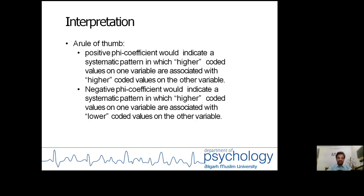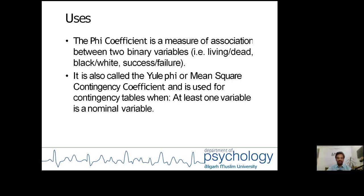Interpretation: A rule of thumb is that a positive phi coefficient would indicate a systematic pattern in which higher coded values on one variable are associated with higher coded values on the other variable, as in our case. A negative phi coefficient would indicate a systematic pattern in which high coded values on one variable are associated with lower coded values on the other variable.